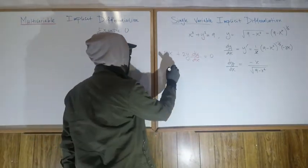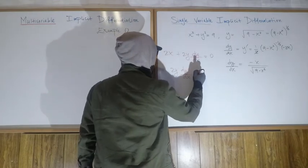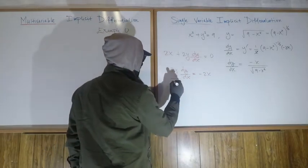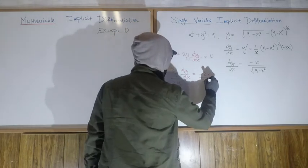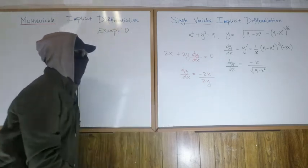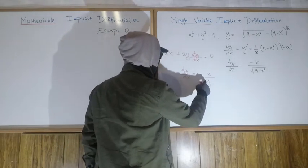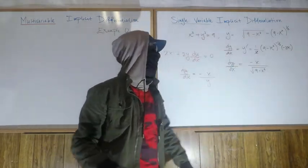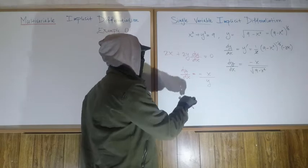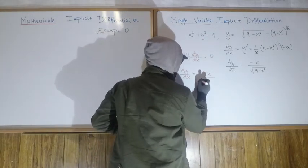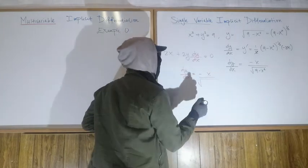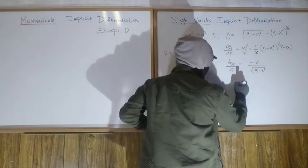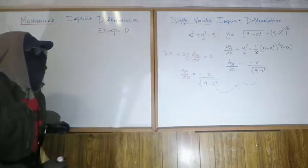The derivative of x squared is 2x, plus the derivative of y squared is 2y — and since I took a derivative of something with y, I immediately multiply by dy/dx — equals zero (derivative of nine). So 2y · dy/dx equals negative 2x, and dividing by 2y gives dy/dx equals negative x over y. Substituting y equals the square root of nine minus x squared, the two answers agree.